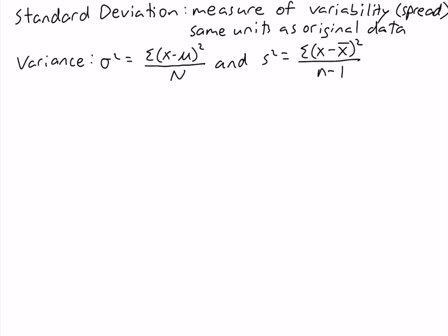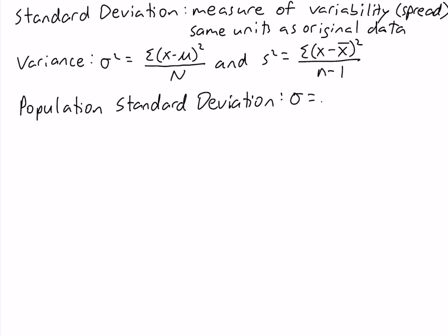So we have two different standard deviations depending on whether we're working with a population or sample of data. The population standard deviation is written as sigma and it's simply equal to the square root of the population variance. This is why the standard deviation is in the same units as the data — because the variance is in the squared units of the data, and the standard deviation is just the square root of the variance, which brings the units back to the original units.